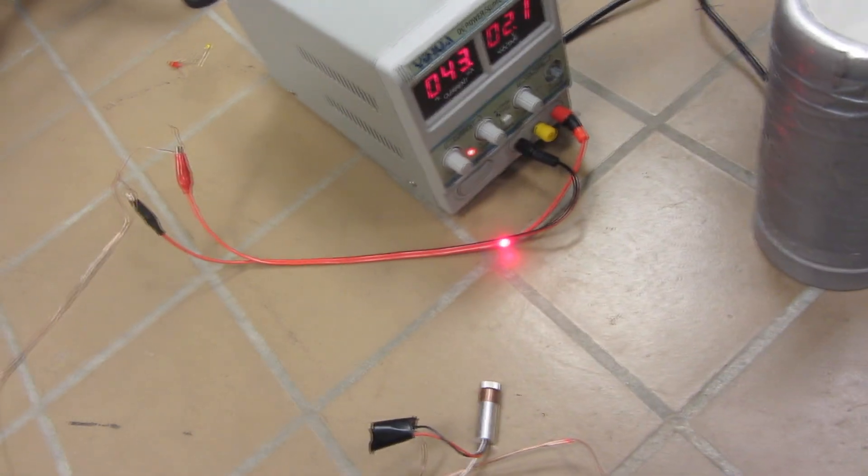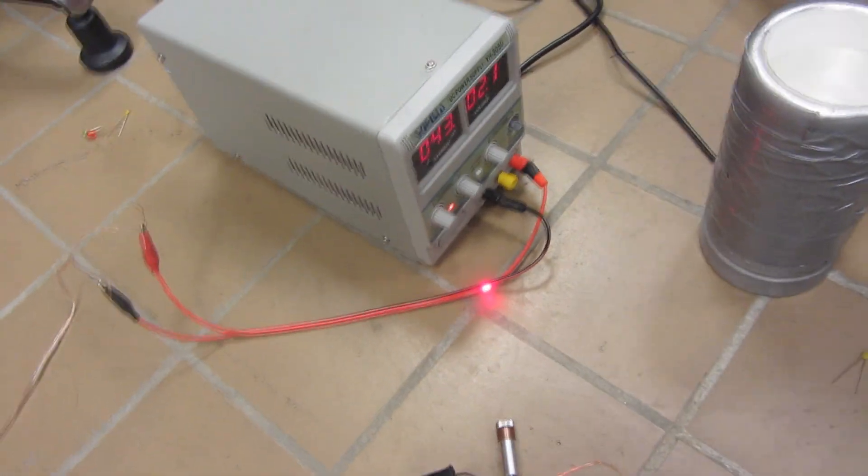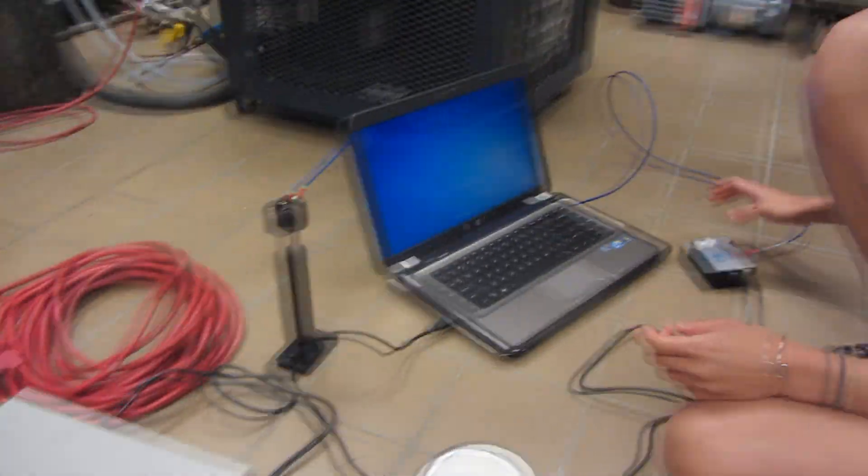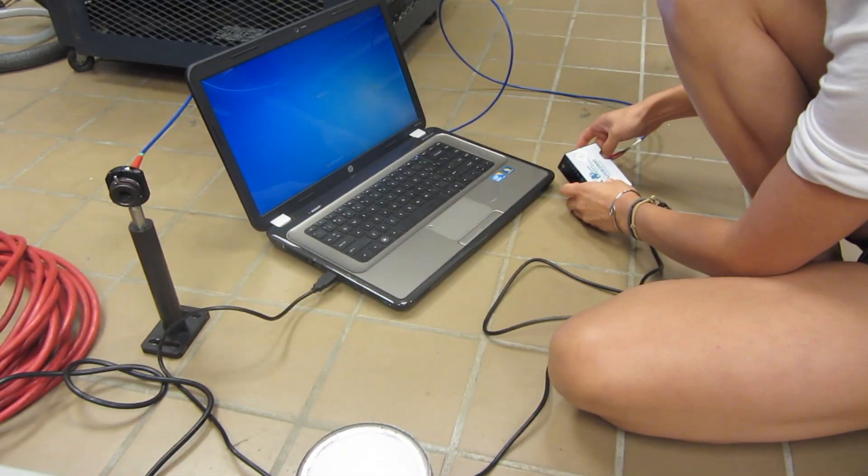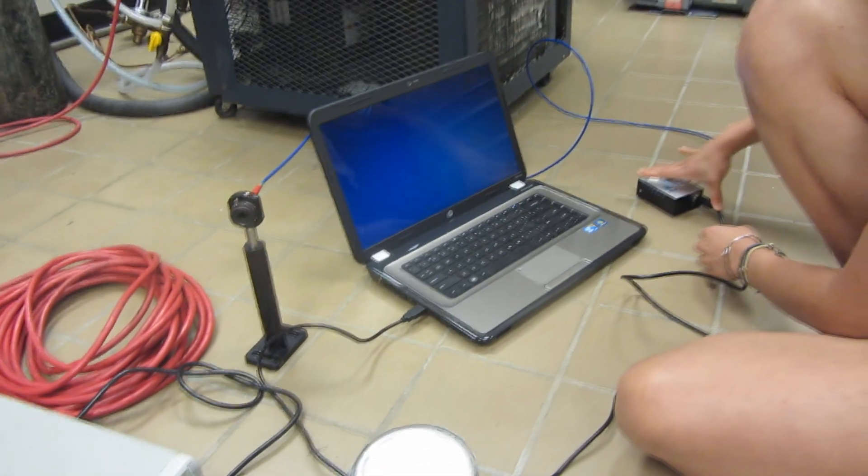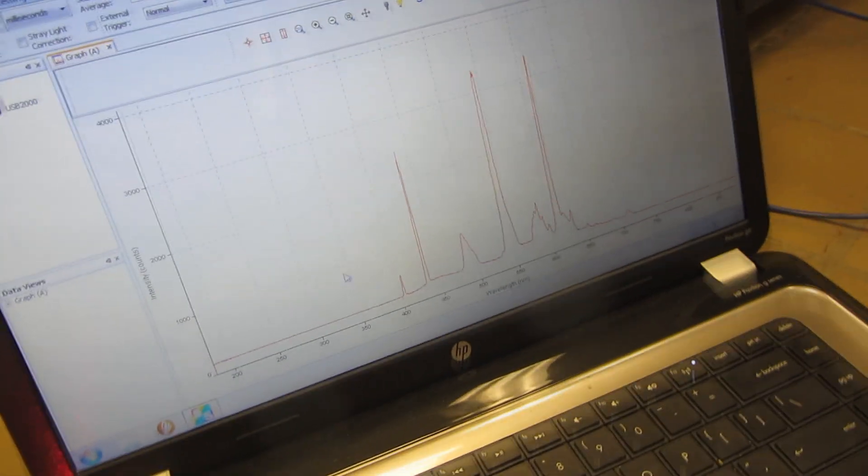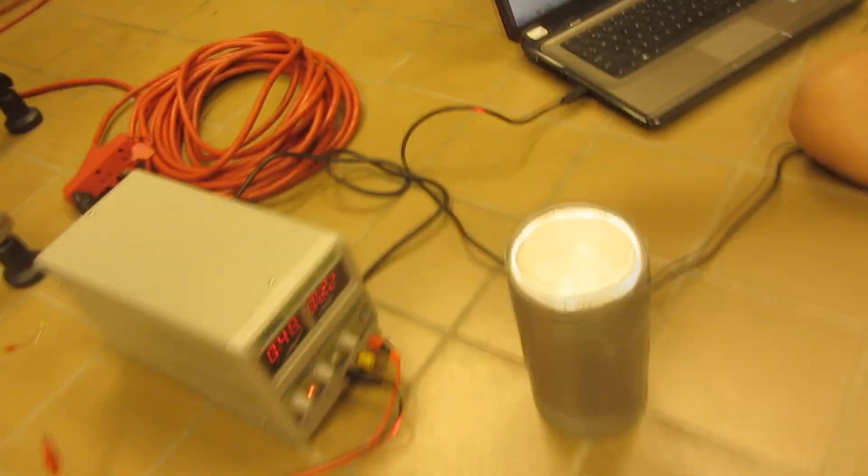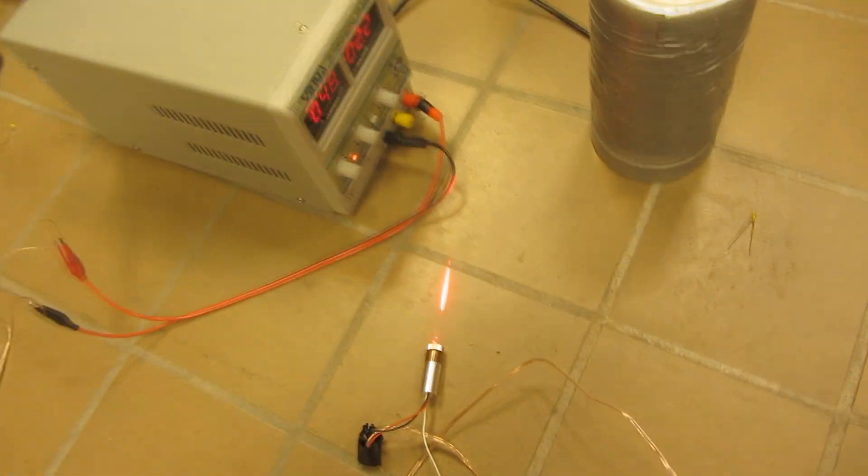Alrighty, so here I have a 635 nanometer laser diode. We're hoping to really shift this thing to yellow. And then Kaylee over there, she has a spectrometer hooked up. So we're going to see what wavelength this thing will actually put out when we freeze it. Okay, our spectrometer is definitely showing that the fluorescent lights are working. So yeah, we'll get a reading on this laser diode.